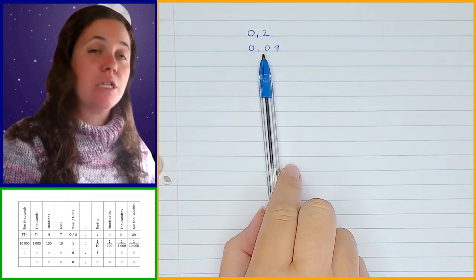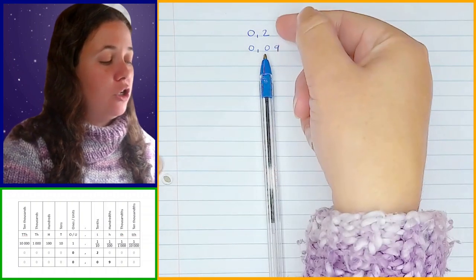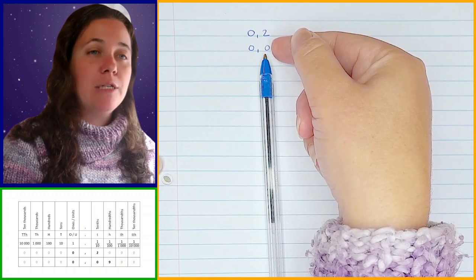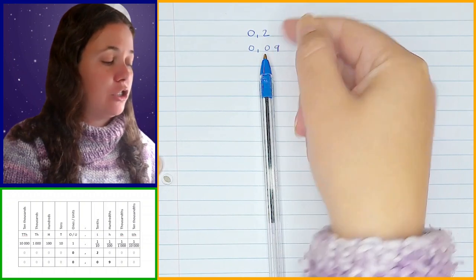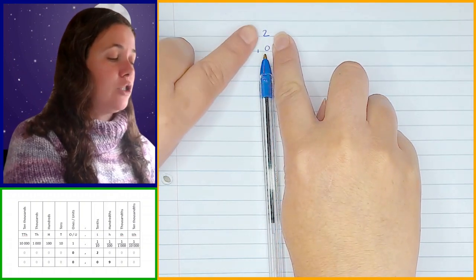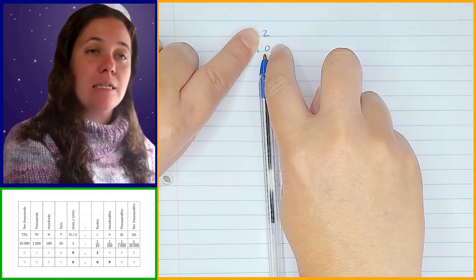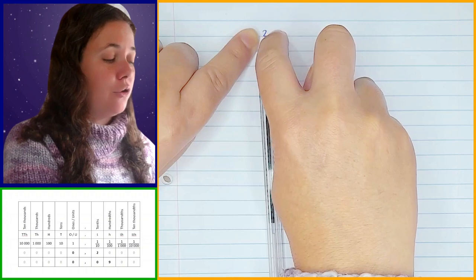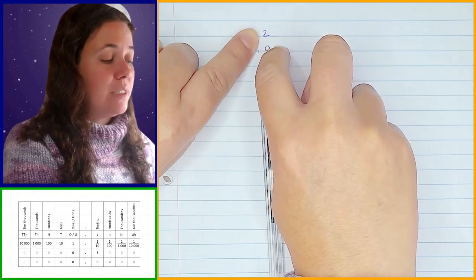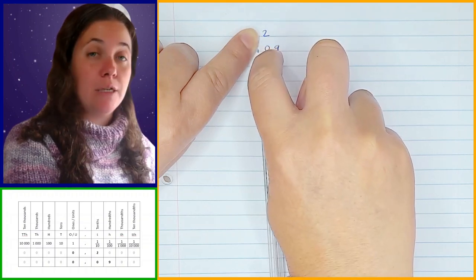Now I go on to the next digit, the tenths position. Now if you look at 0.2, it's got a 2 in the tenths position, but 0.09 has a 0 in the tenths position. So I'm not worried about that 9 at all — at the moment I'm just looking at the 2 and the 0. 2 is greater than 0. So even though 2 is less than 9, because the 2 is in the tenths position, I'm not comparing 2 to 9, I'm comparing 2 to 0.